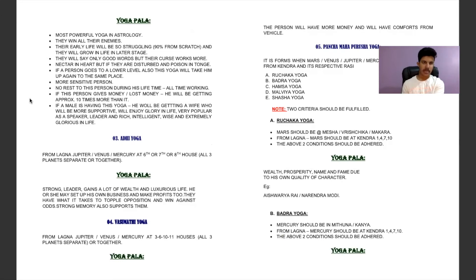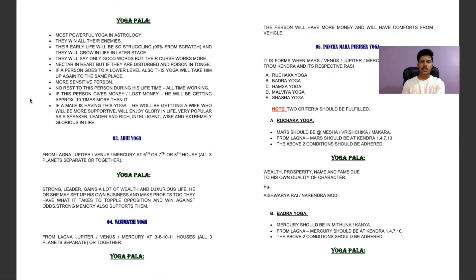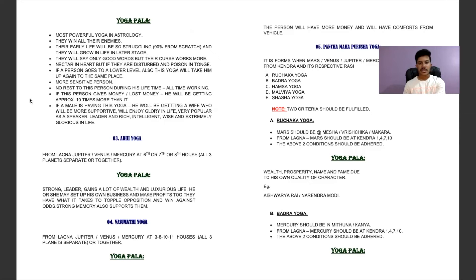For Sagittarius, Aquarius, or Leo ascendants the results are 75%; for Taurus, Gemini, Virgo, Libra, or Capricorn results are less than 50%. If both conditions are applicable, the person possesses Gajakeshara Yoga. This is the most powerful yoga in astrology. When present, early life will be very struggling — 90% starting from scratch — and they will grow in life in later stages. If this person gives or loses money, they will receive approximately 10 times more back.